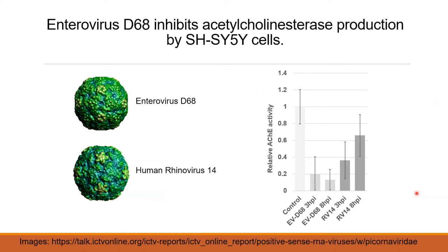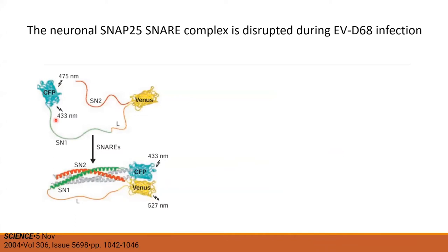When we infect with EVD68 it inhibits neuronal function. As a readout we used acetylcholinesterase, which reflects a feedback process of acetylcholine signaling. EVD68 strongly and quickly inhibits acetylcholinesterase and keeps it down throughout eight hours of infection. When we infected with rhinovirus 14, which is not thought to affect neuronal function, we did see a drop in acetylcholinesterase, but it starts to recover by the end of the infection — a very different profile from EVD68.